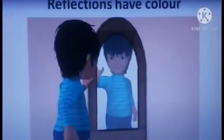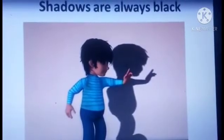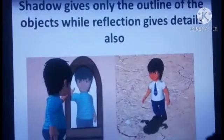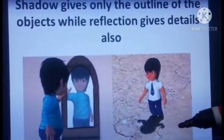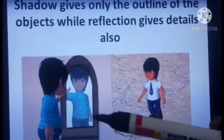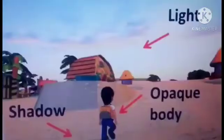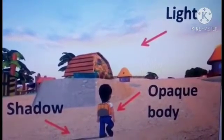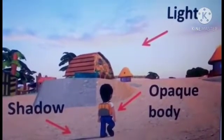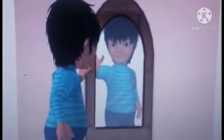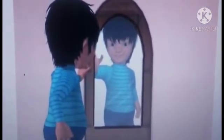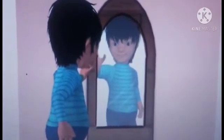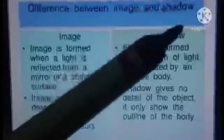Reflections have colors whereas shadows are always black regardless of the color of an object. Shadows give only the outline of an object while reflection gives us details also. Shadows are formed when light is obstructed by an opaque object, whereas reflections are formed when light is reflected by a shiny, smooth and plain surface.